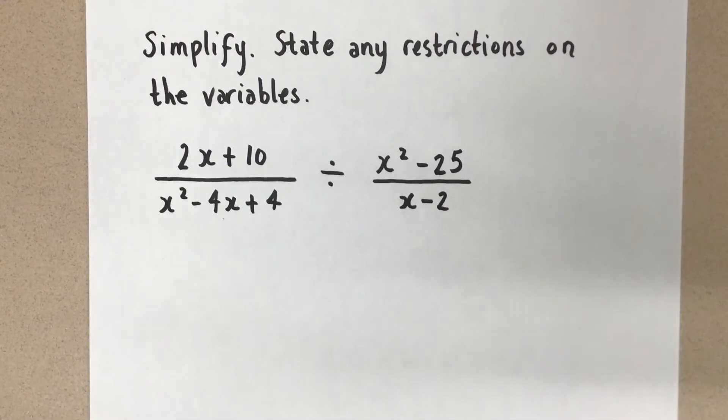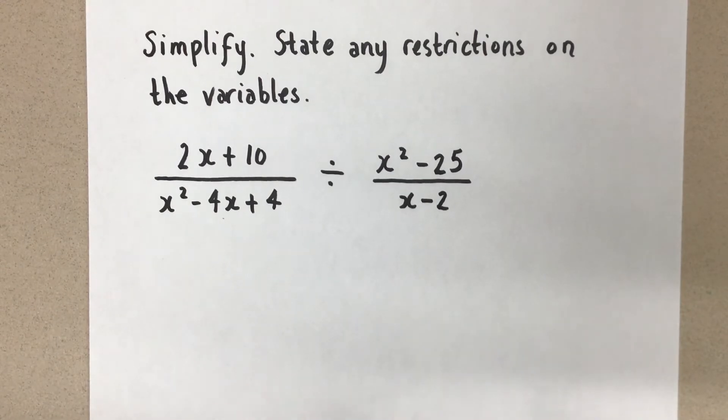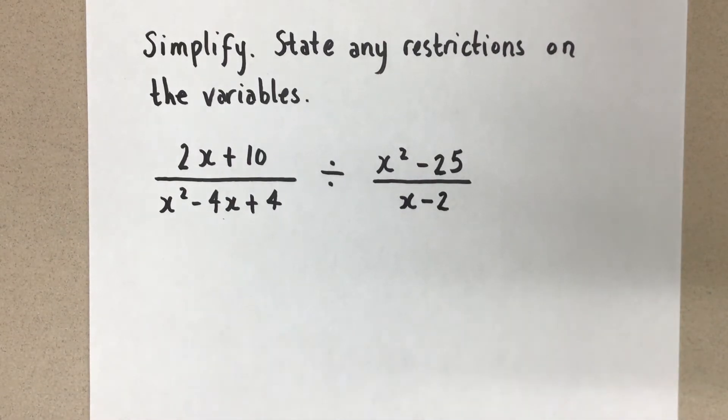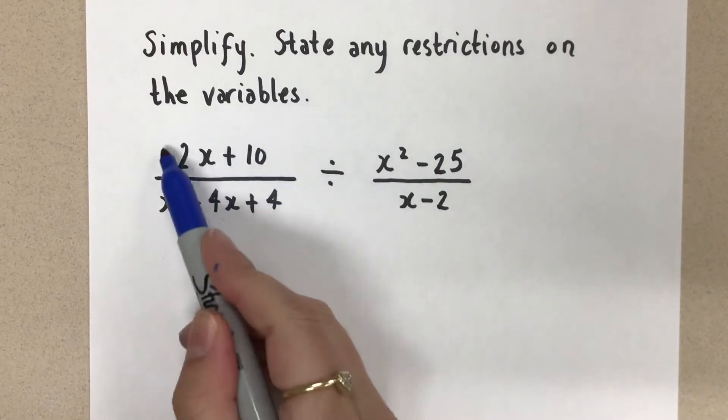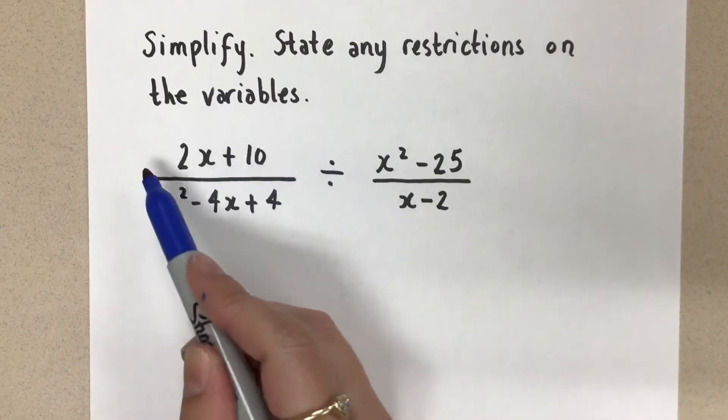Before I go ahead and do that step, I always like to start by factoring first, because I know I'm going to have to factor all of the numerators and denominators in order to get the restrictions for the variable and in order to simplify and divide out any common factors. So I'm going to go ahead and factor. This portion right here, the 2x plus 10, there's a common factor of 2, so I'm going to do that.